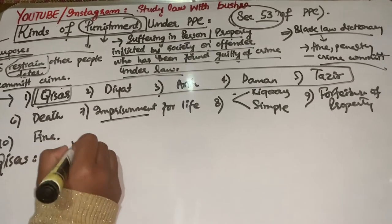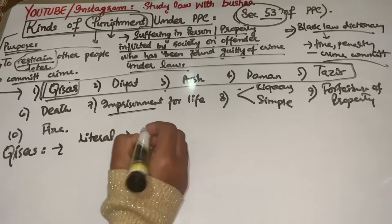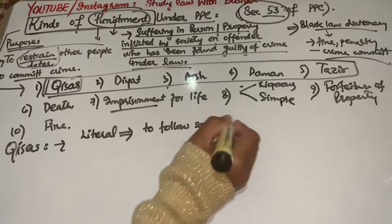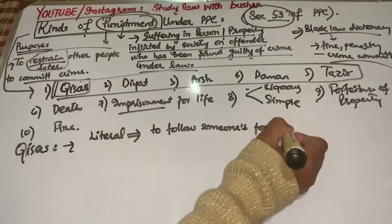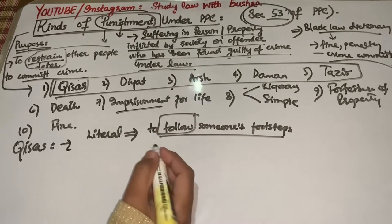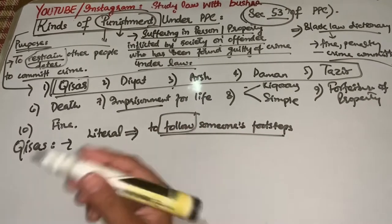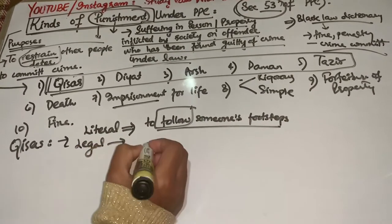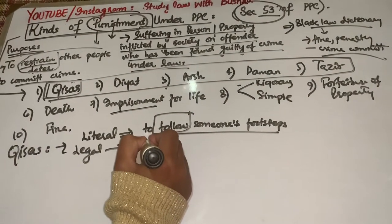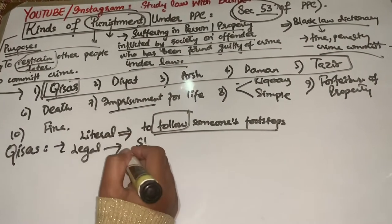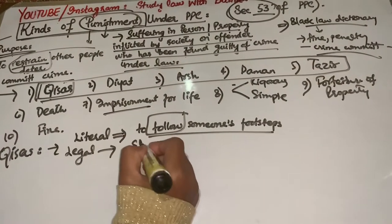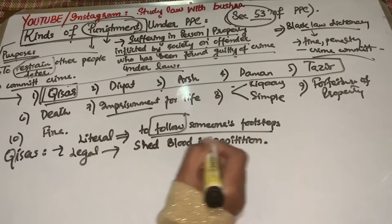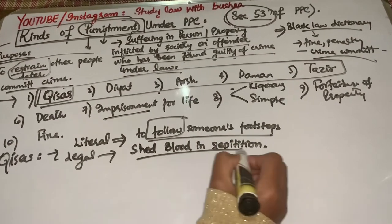The first is Kisas. Kisas ka matlab agar hum literal meaning dekhein, to follow someone's footsteps. Ki kisi bande ko copy karna, kisi bande ko follow karna — woh kaam jo kisi ek bande ne kiya hai, doosra banda bhi woh hi kaam kare, usko follow kare.